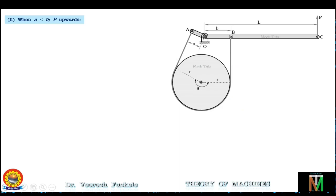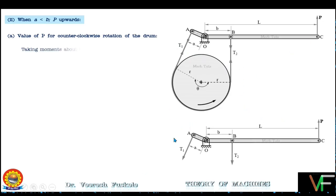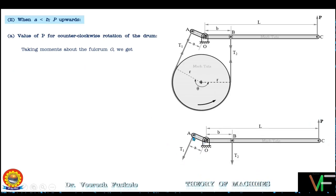Let's first see the counterclockwise rotation of the drum. When the drum rotates counterclockwise, one side of the belt will be the tight side having tension t1 and the other side will be the slack side having tension t2. This is the free body diagram of the lever having forces P, t1, and t2. Taking moments about fulcrum point O: t1 will rotate the lever anticlockwise, so it will have a positive moment with magnitude t1 × a, and P will also have an anticlockwise rotation.